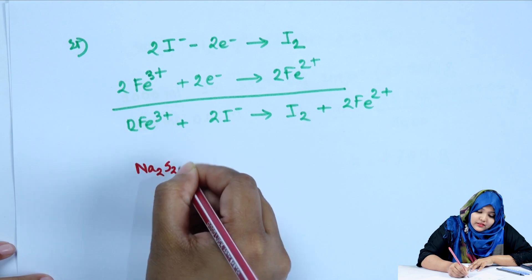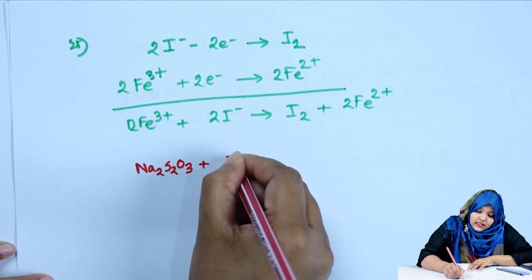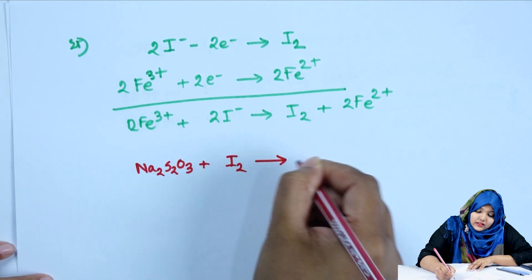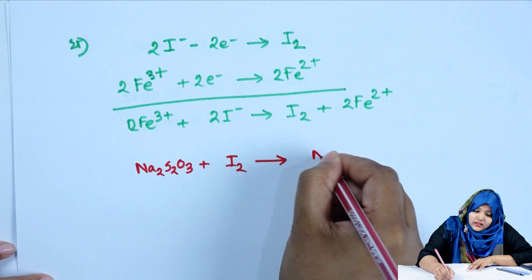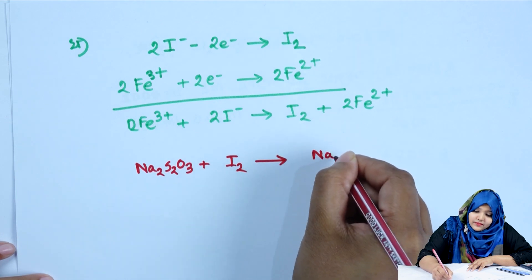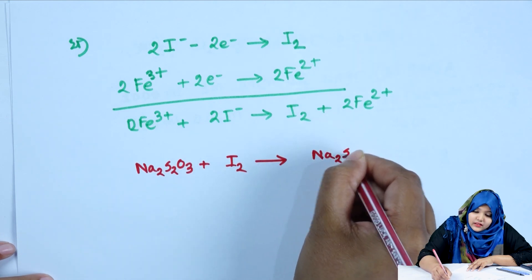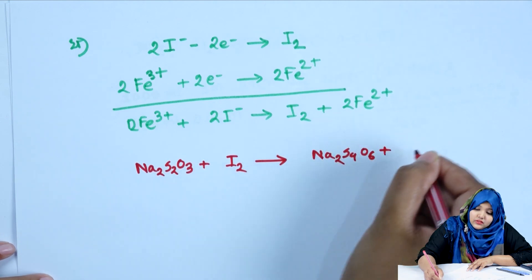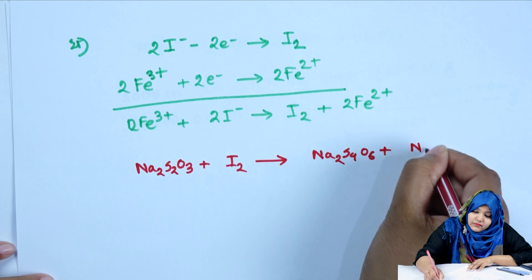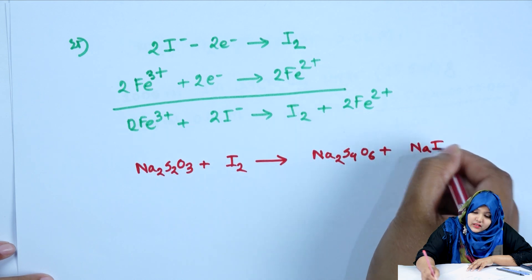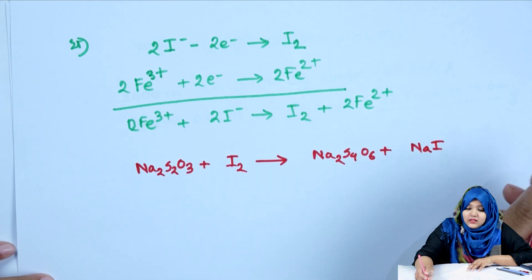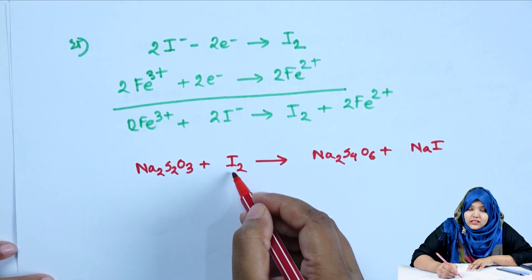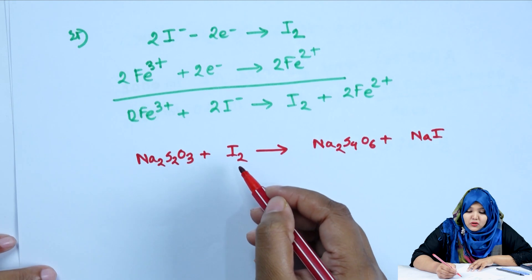Thiosulfate reacts with iodine to form sodium tetrathionate and sodium iodide. This is iodine — the iodine is 2T.